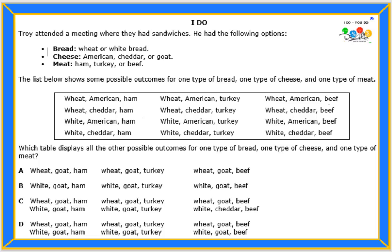Hello students! Let's read this problem together. Troy attended a meeting where they had sandwiches. He had the following options. For bread, he could choose wheat or white. For cheese, he could use American, cheddar, or goat cheese. For meat, he could have ham, turkey, or beef.